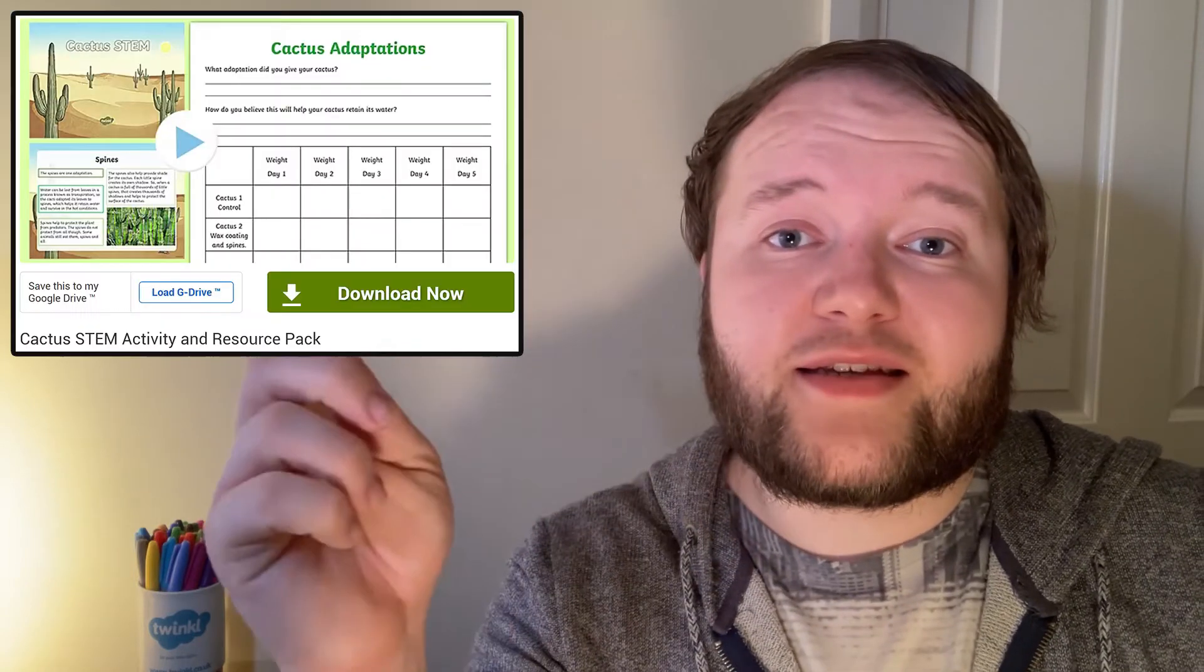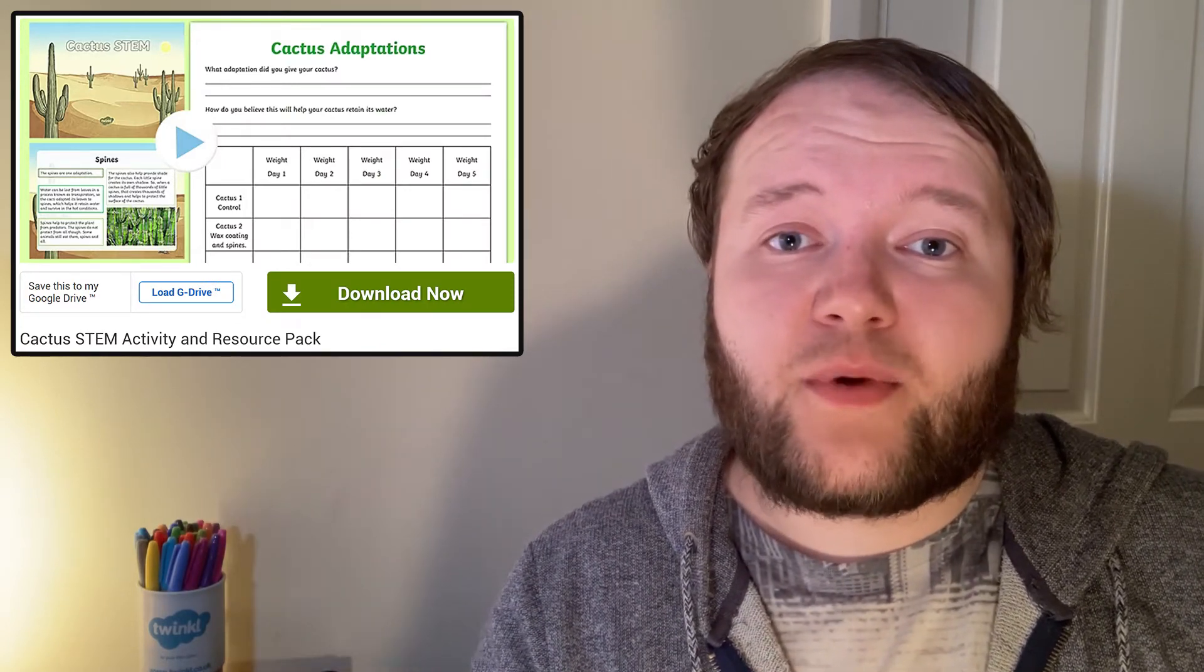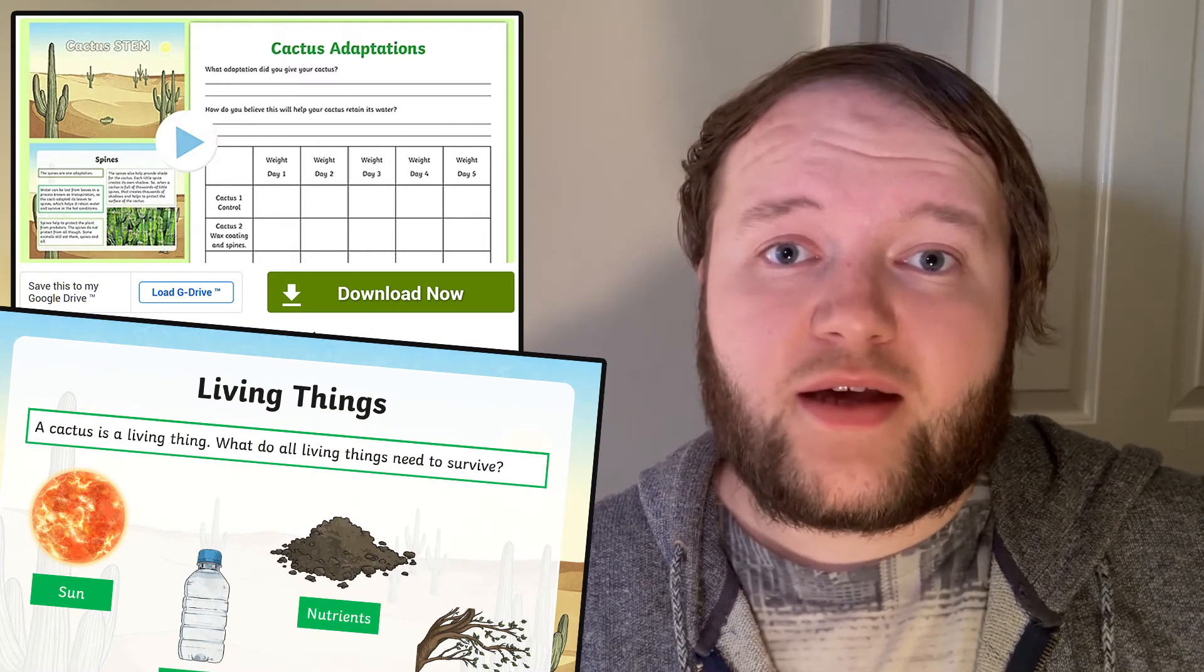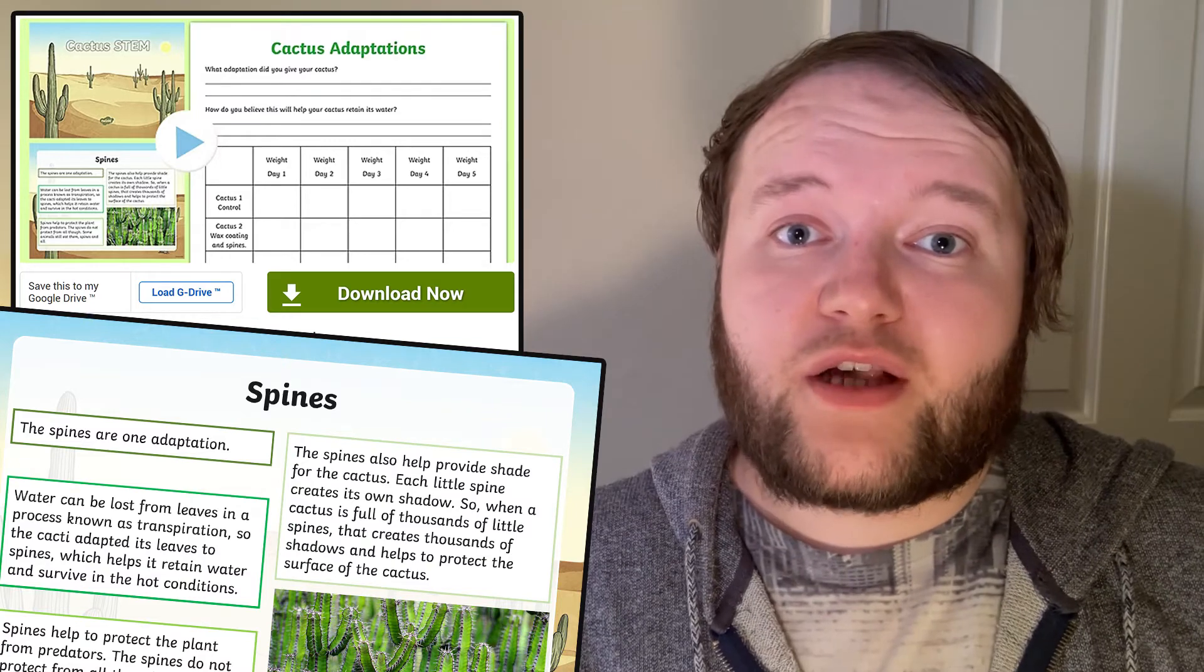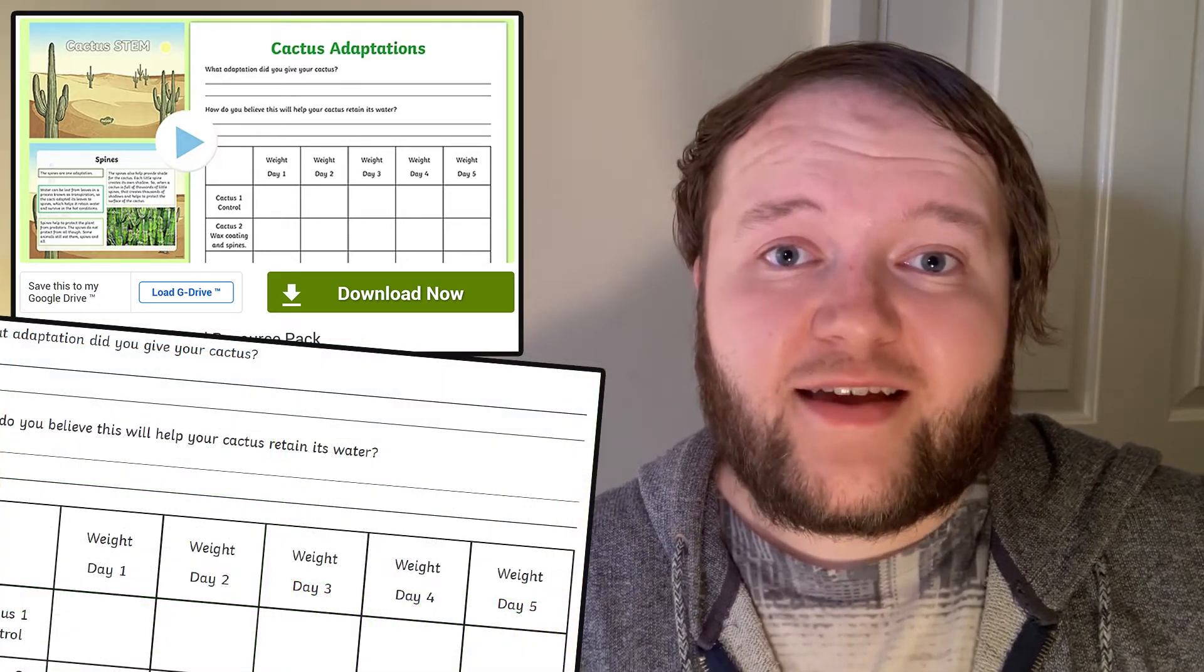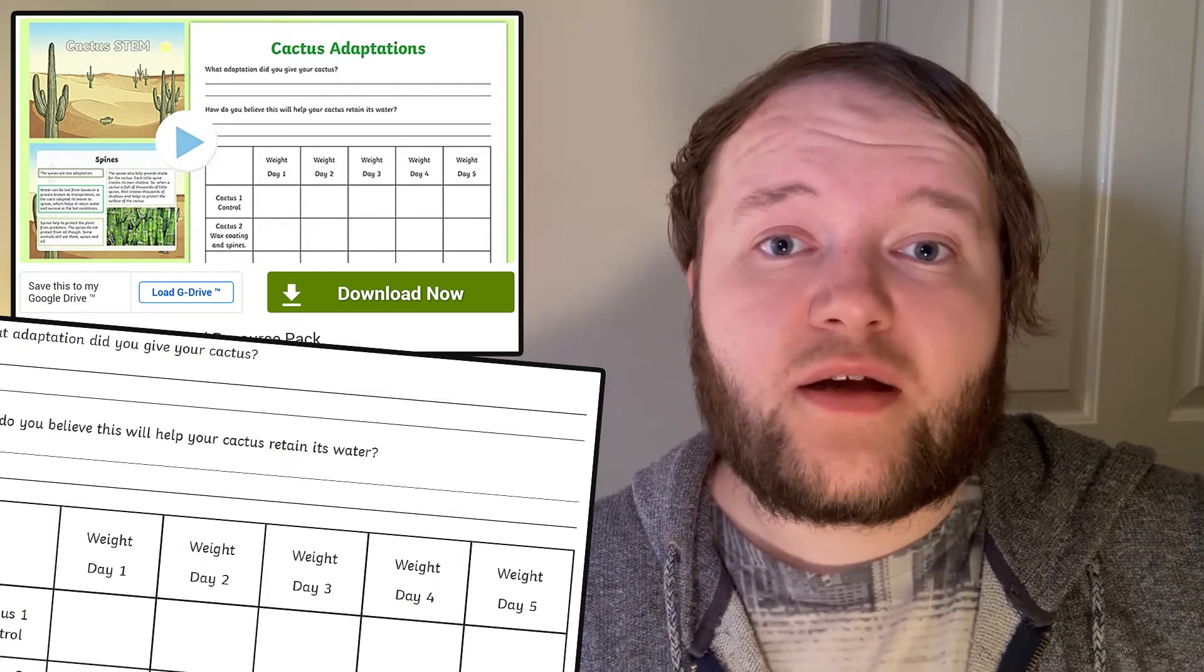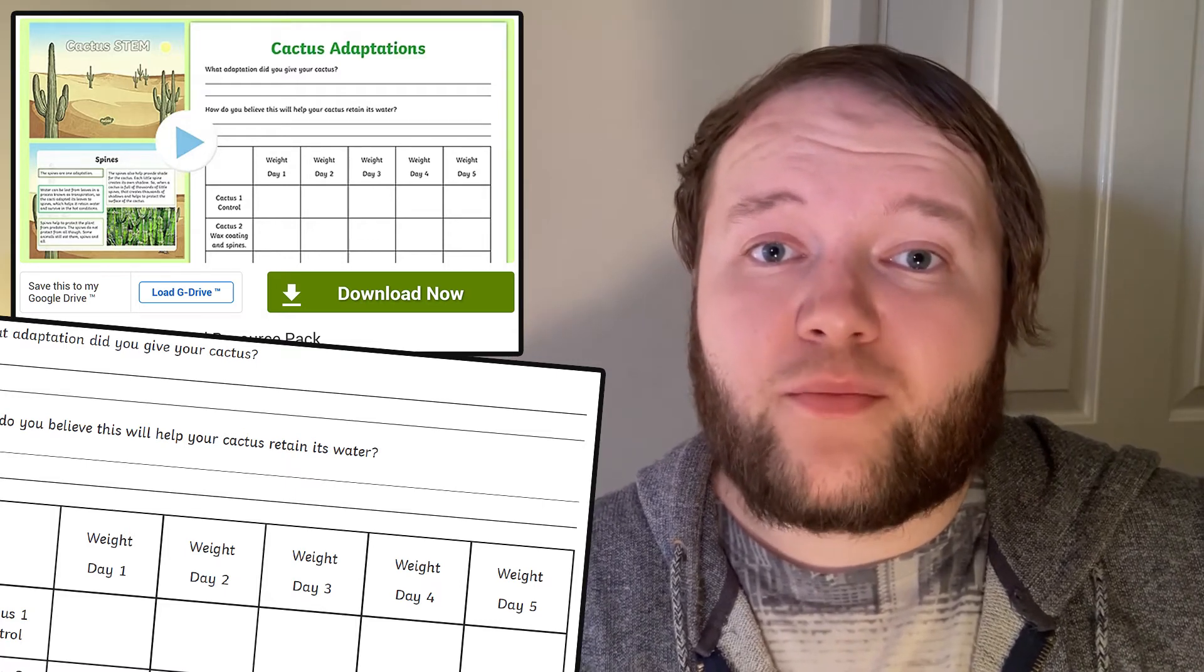Start off with this activity pack. Included is a PowerPoint that explains in greater detail how the cactus is adapted to its environment, how its adaptations help it to survive. There is also an included investigation if you have access to a cactus, allowing you and your learner to investigate its adaptations by observing the plant and recording data over a number of days.